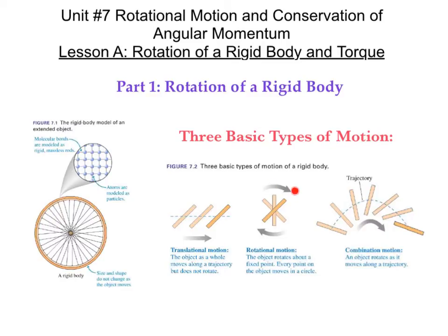In rotational motion, the object rotates around a fixed point and every point of that object moves in a circle. And then there's a combination of the two. Most motions are really a combination of translational and rotational motion, where the object will rotate as it flies through the air, for example.